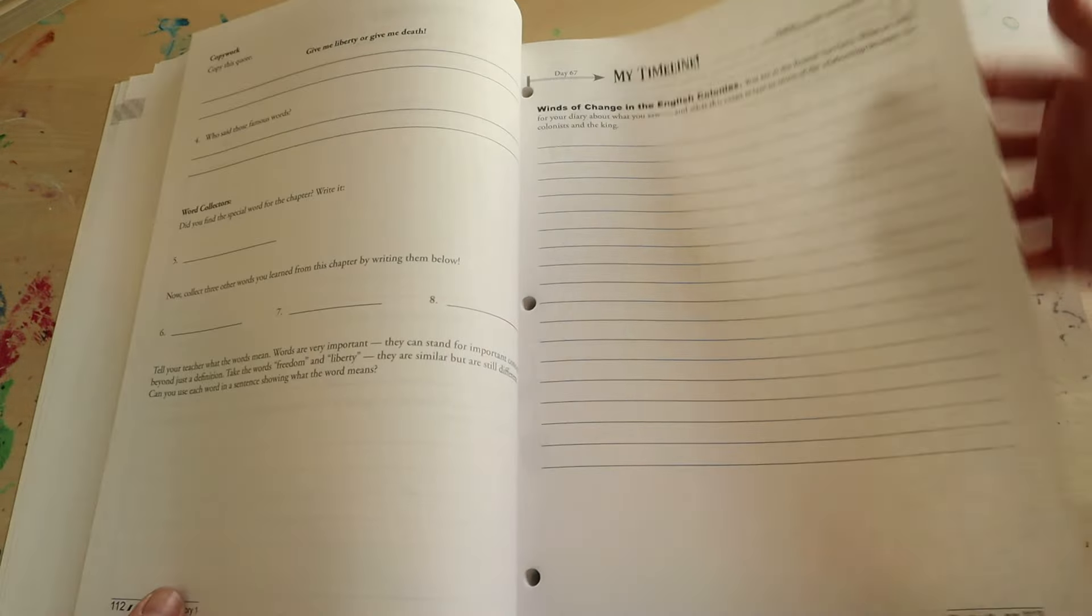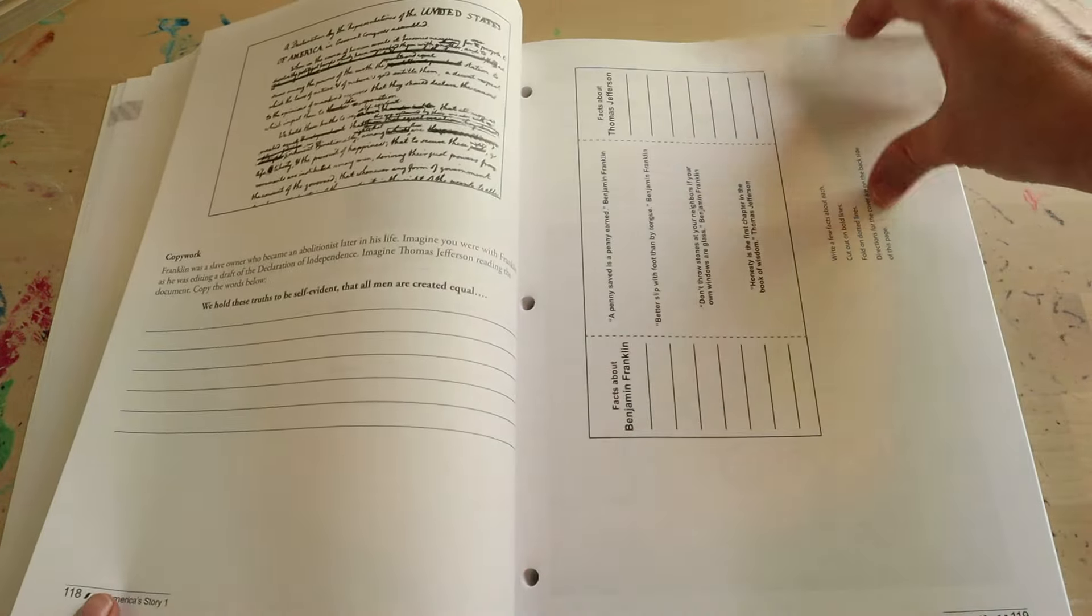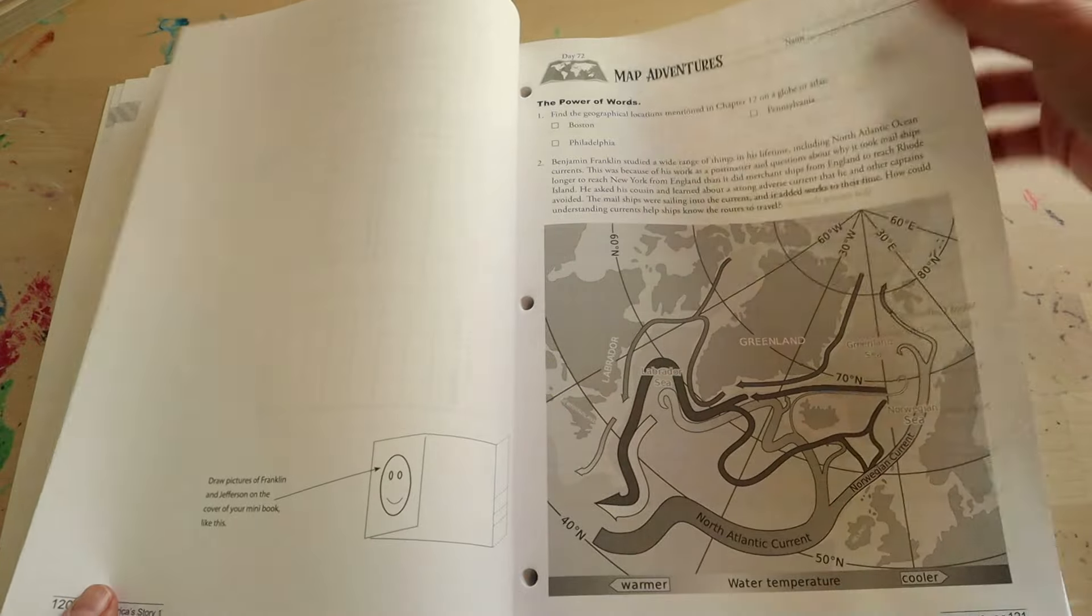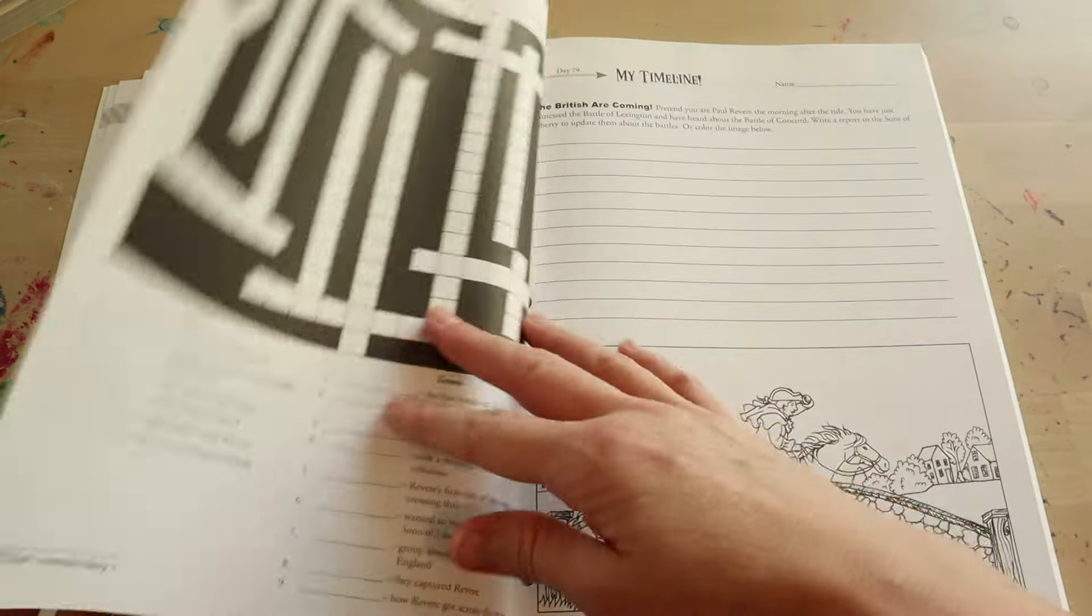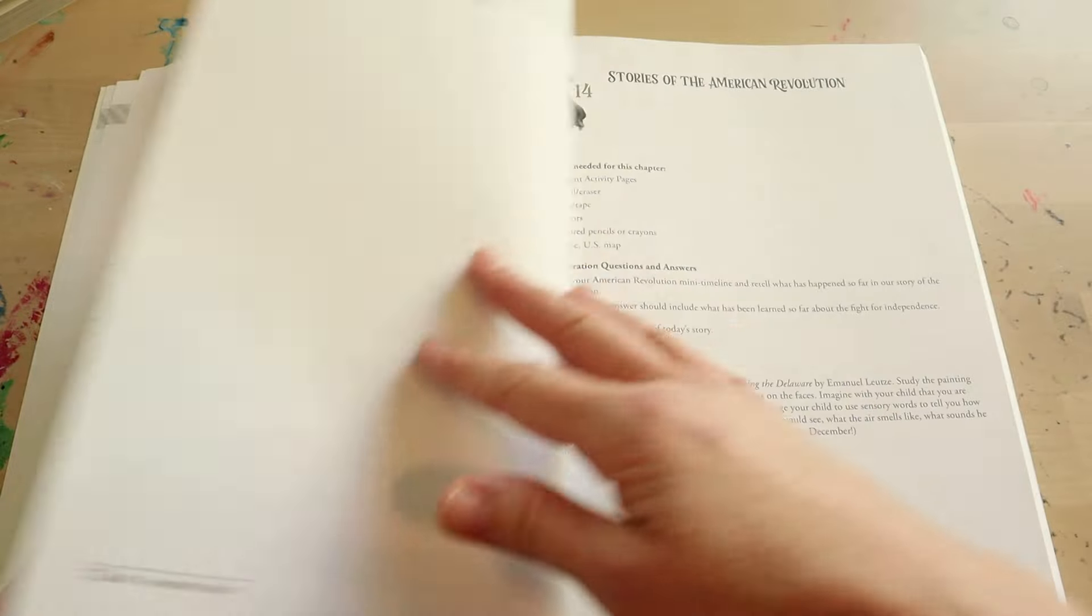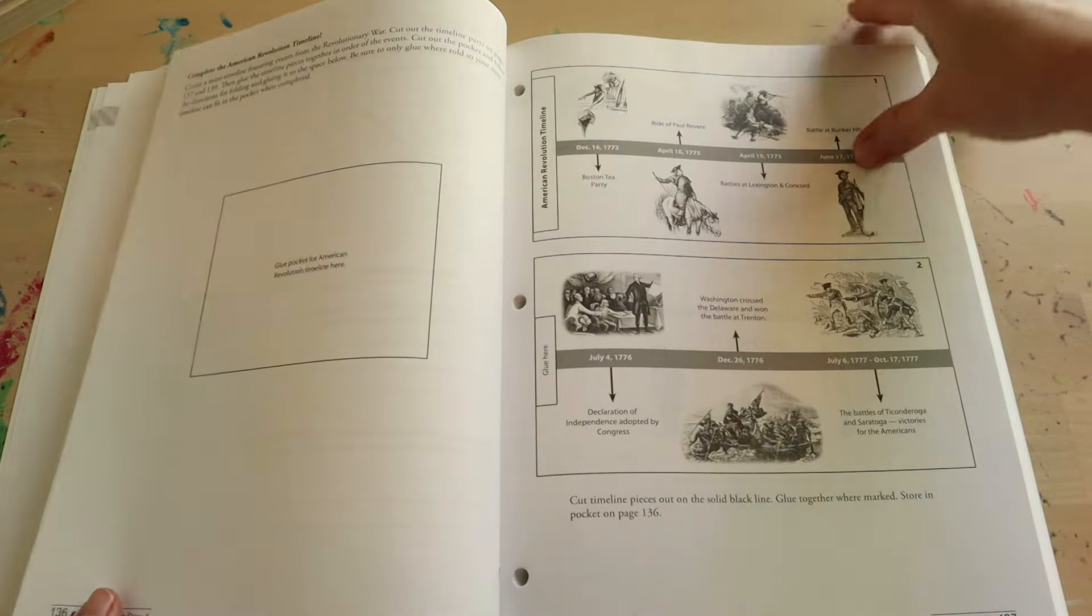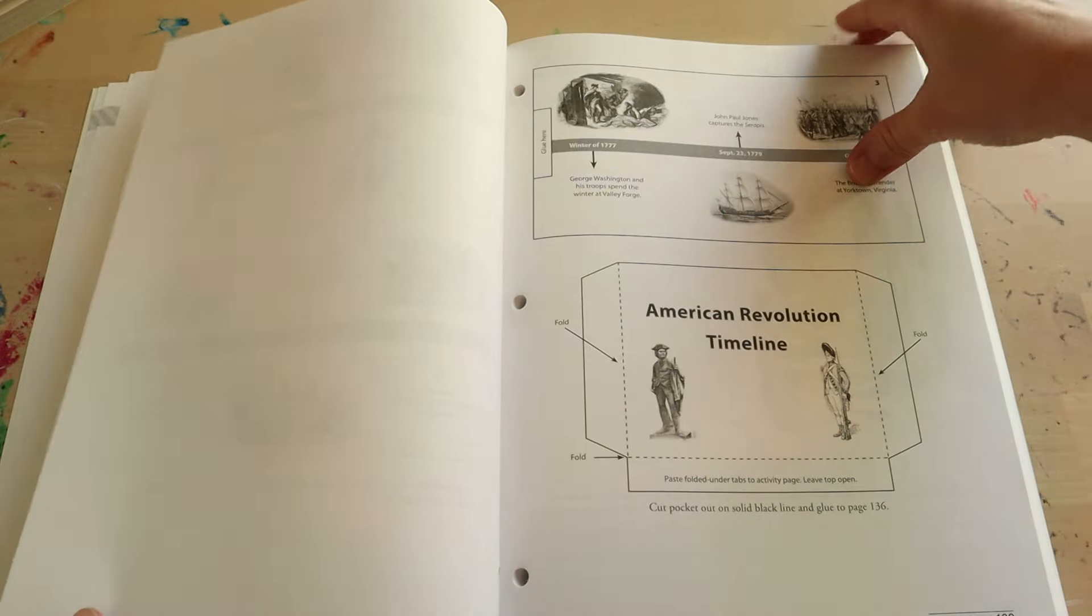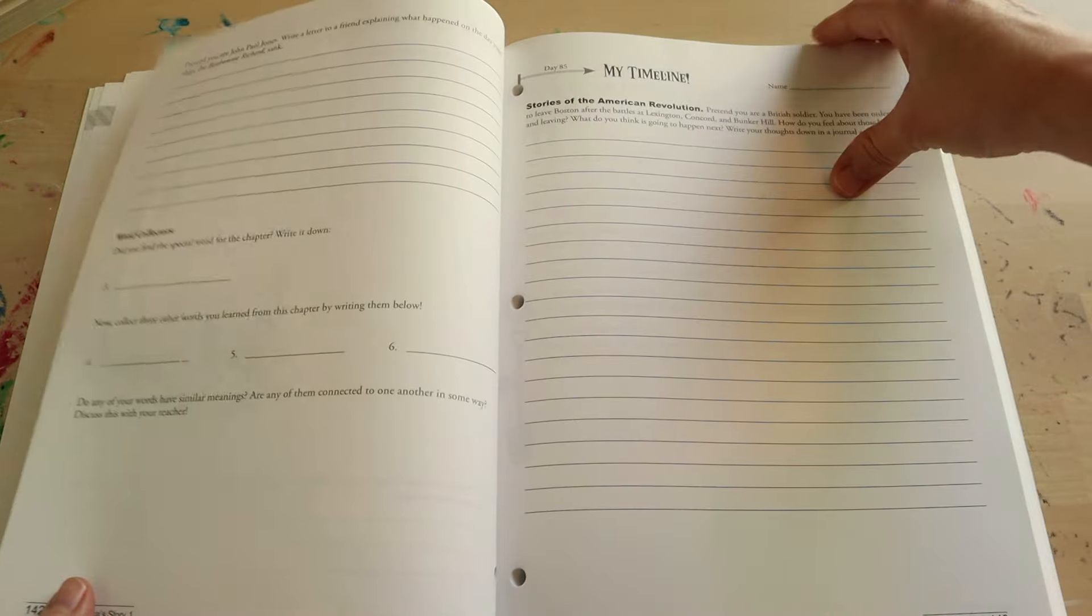For older students, they do have a written narration section where your child will receive a question and can write their response. The next activity will be to sketch something that you're learning about that week and answer whatever questions they have for that day. Sometimes this will be followed by a mini report or copy work, writing a letter, or various other activities.